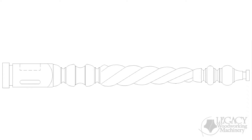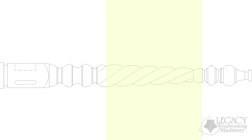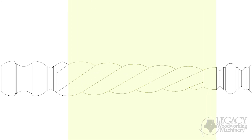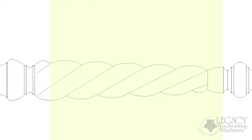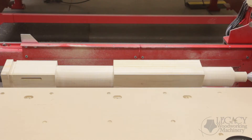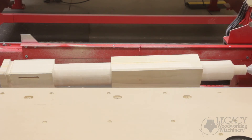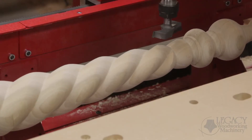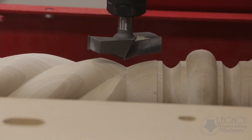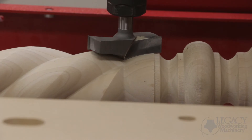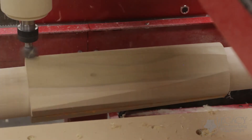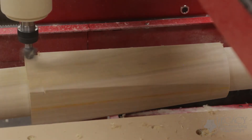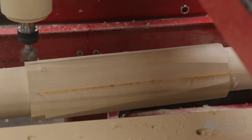And last, we have tapering. These tool paths are created in this section. Many spindle designs gradually taper straight down to a smaller diameter. Legacy's unique 5th axis feature will tilt the stock, making it possible to match the tapered surface to the face of the cutter. Almost every tool path in Conversational CAM can be applied to a tapered surface.